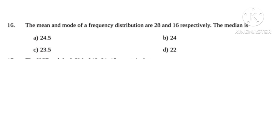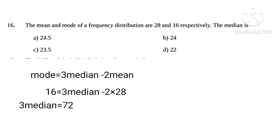As we know, mode equals 3 median minus 2 mean. 16 equals 3 median minus 2 times 28. Therefore, 3 median equals 72. Hence, median equals 24.